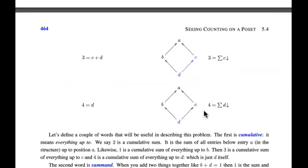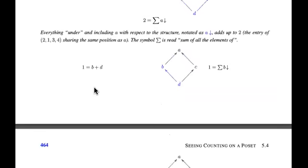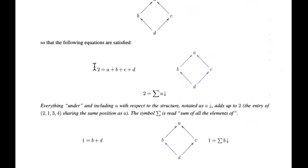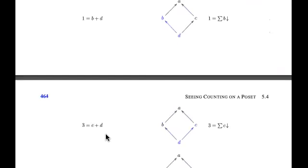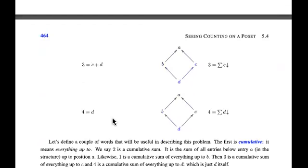And we want 4 to be the sum of d and everything below it — which is just d itself. So quite literally, we have a system of equations. We're just trying to find a, b, c, d that satisfy: two equals that, one equals that, three equals that, and four equals that. Just a system of equations, and we want to find a solution to that system.